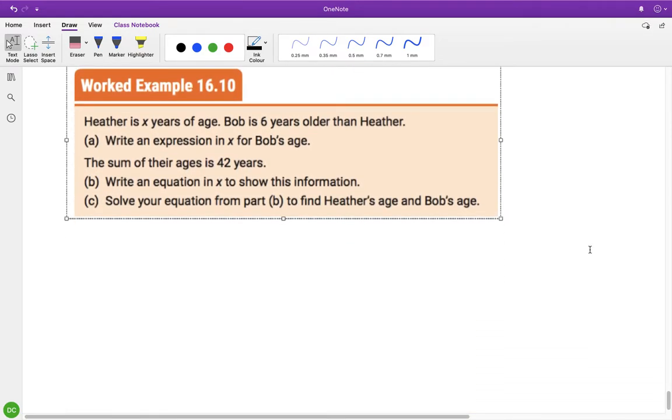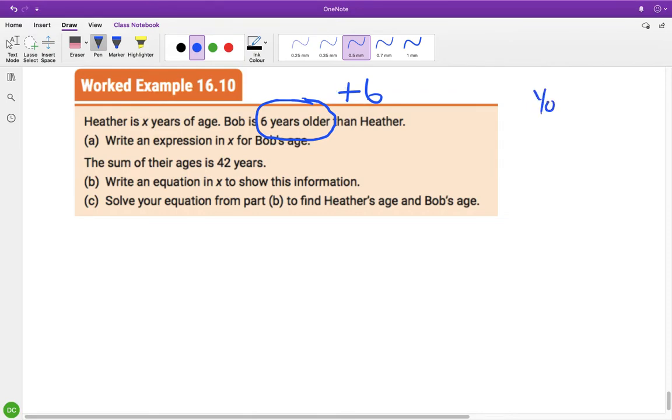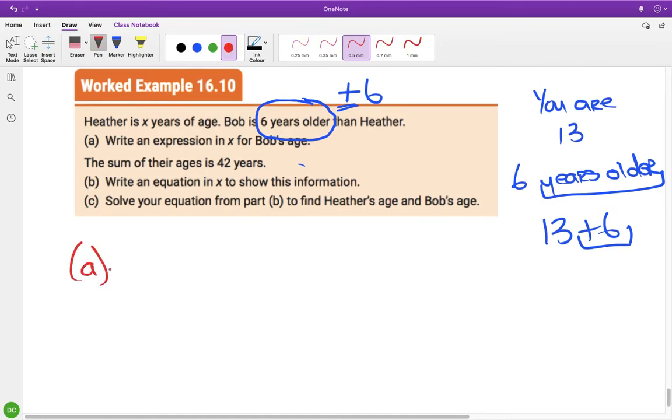So Heather is x years of age. Bob is six years older. Now, here's language. Six years older, that's plus six. So if you are 13, so you are 13 years old and your brother is six years older, if you are trying to work out how old your brother is, you would do the 13 and add on the six. So when they say six years older, you're adding. So that's a bit of language there. Six years older is addition. And here we are writing expression. So we start with Heather's x and Bob is six years older.